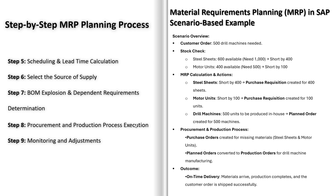Let's take a look at how MRP — Material Requirements Planning — works in SAP with a simple example. Imagine we're managing production for a company that manufactures drill machines. Today, we've received a new customer order: 500 drill machines need to be delivered. But before we start production, we need to check whether we have enough raw materials. SAP first checks our stock levels — steel sheets: 600 in stock but we need 1000; motor units: 400 in stock but we need 500. We don't have enough materials, so MRP comes into action and SAP automatically analyzes the shortage and generates procurement proposals.